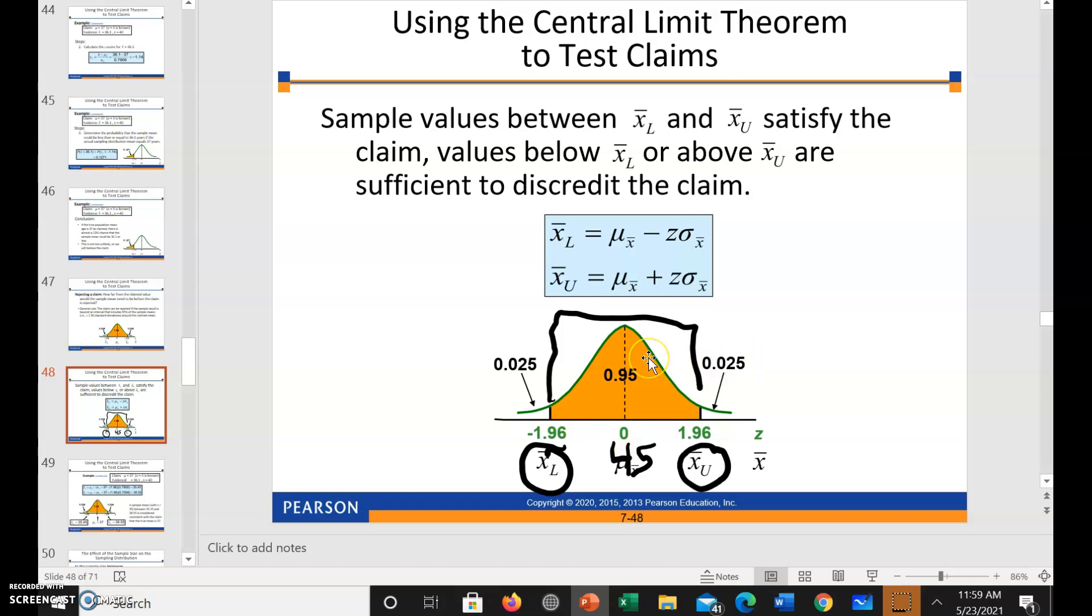Well, first of all, how did they come up with that z-score? We have to have the z-score in order to figure out what the x values are going to be. We know that the probability is 95%.